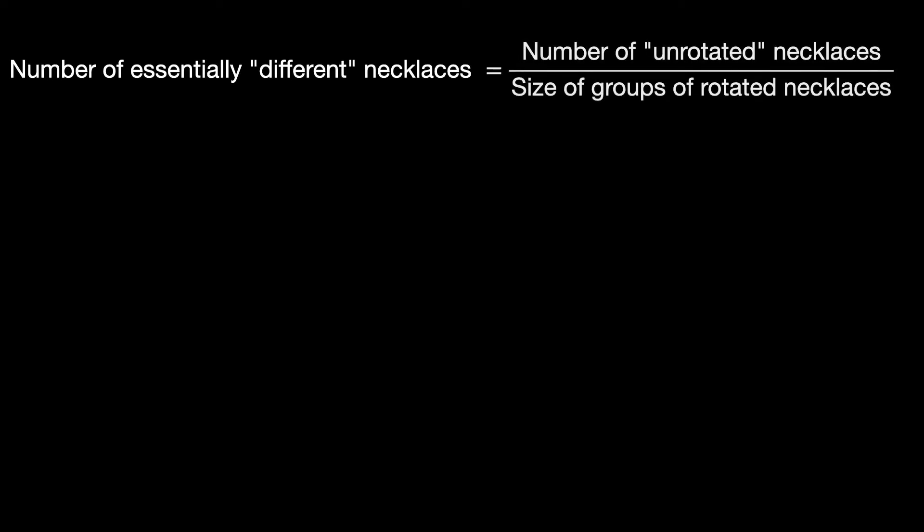The set of 32 necklaces must split up into groups of five, where any two necklaces in the same group are just rotations of one another. But five doesn't divide 32, so we must have made a mistake.